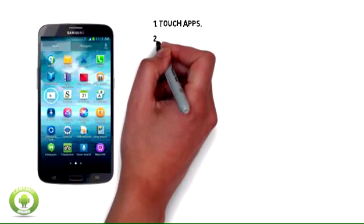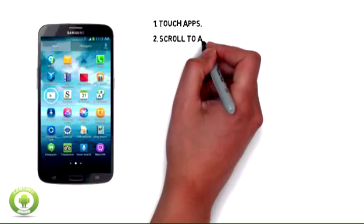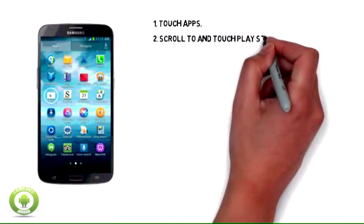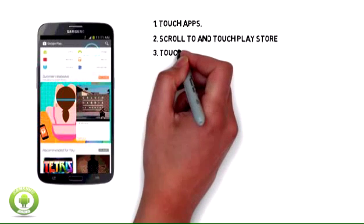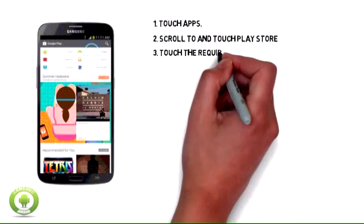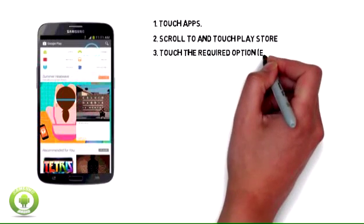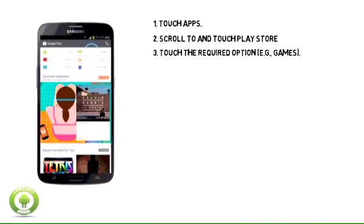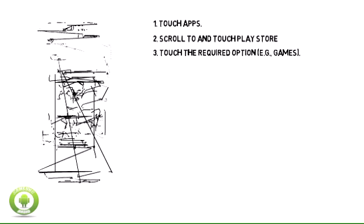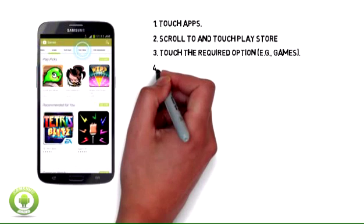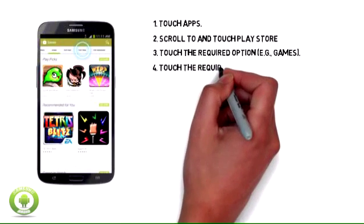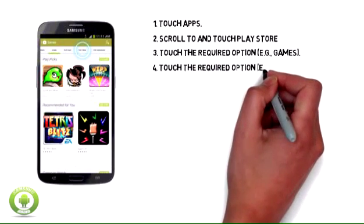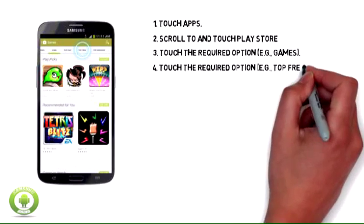1. Touch Apps. 2. Scroll to and touch Play Store. 3. Touch the required option, e.g. Games. 4. Touch the required option, e.g. Top Free.